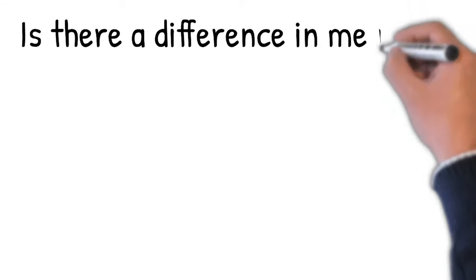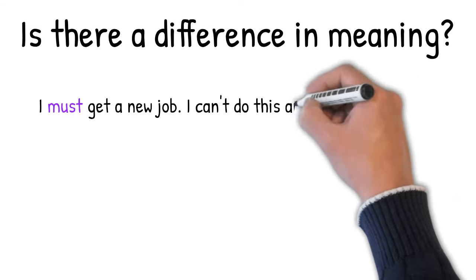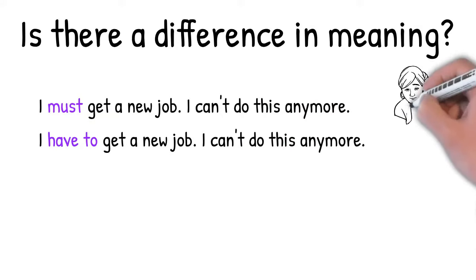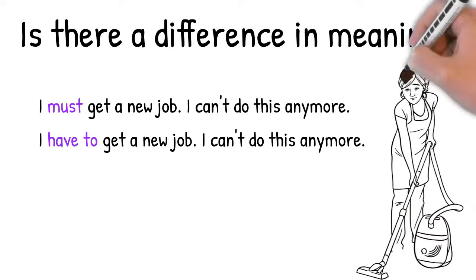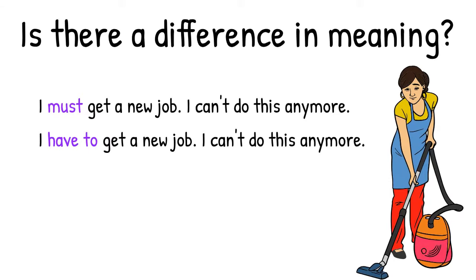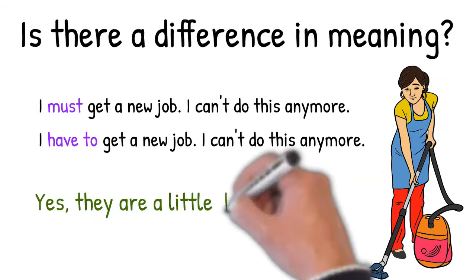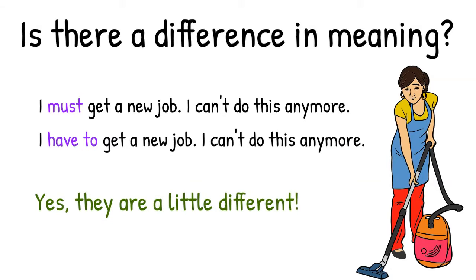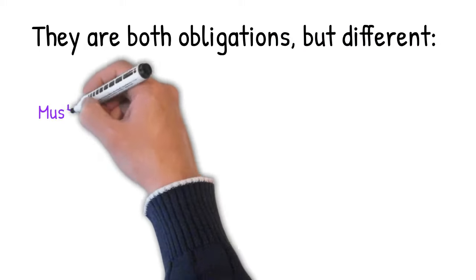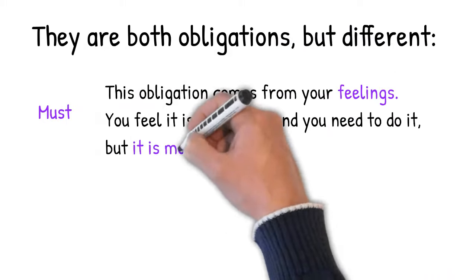But do you think there's a difference in meaning between these two sentences? Let's look at them again: 'I must get a new job, I can't do this anymore' and 'I have to get a new job, I can't do this anymore.' So do you think there's a difference in meaning? Yes, there is a little difference. Let's look at what that looks like. So they are both obligations, but they're different.